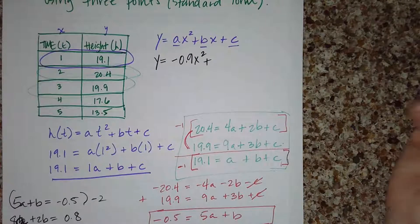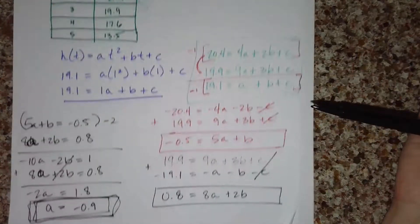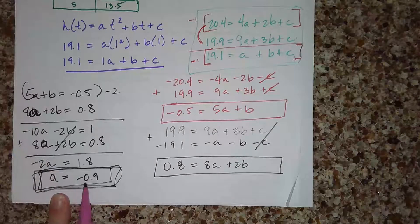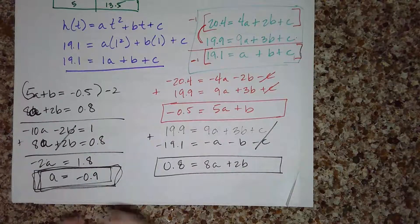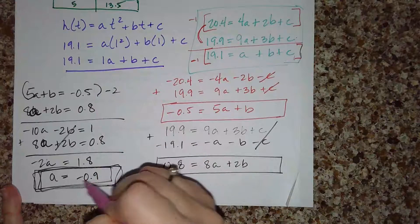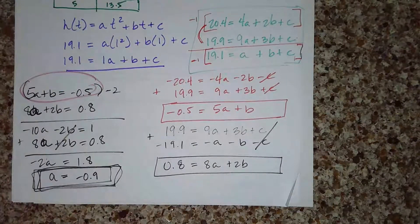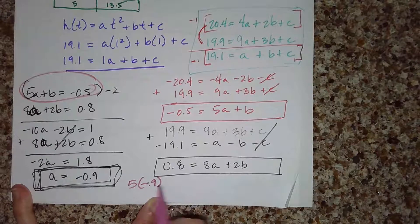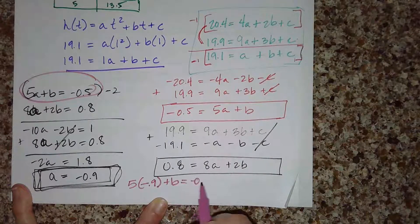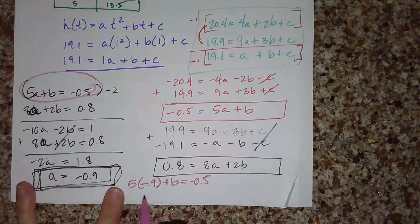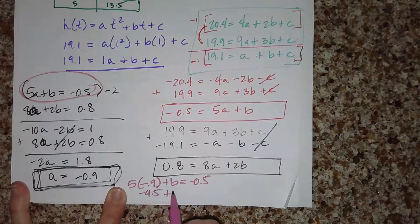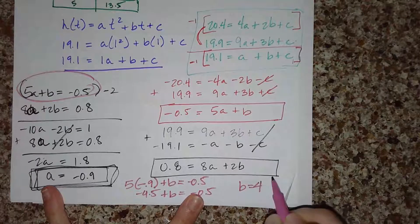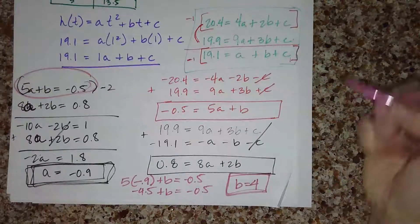Now I need to solve for b and c. I'll plug a equals negative 0.9 back into 5a + b = negative 0.5. That gives 5 times negative 0.9 plus b equals negative 0.5, so negative 4.5 plus b equals negative 0.5. Adding 4.5 to both sides, b equals 4.